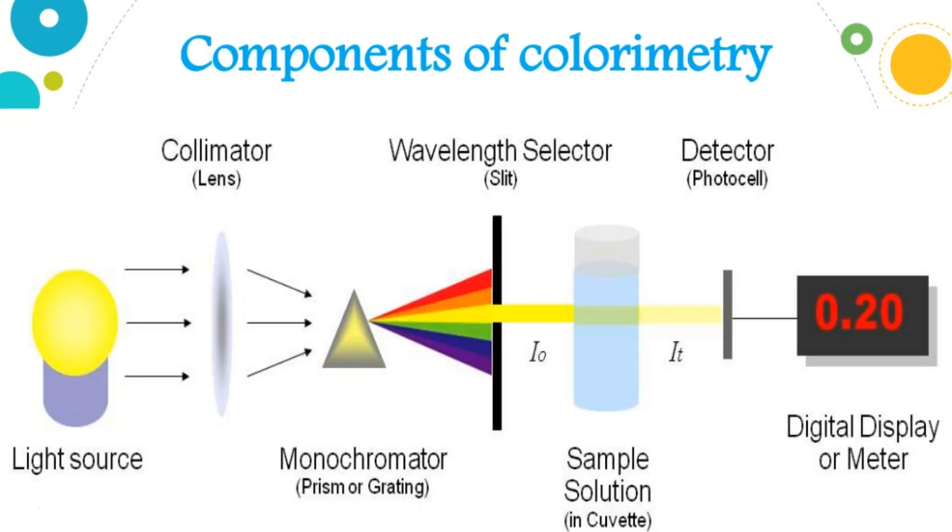The way it works is fairly complicated, but this diagram simplifies it well. You start with a light source. In our colorimeter, it shoots a beam of light through a lens. The lens directs the light onto a prism.